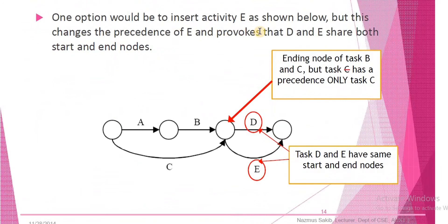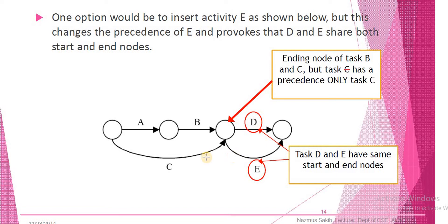One option would be to insert activity E as shown, but this changes the precedence of E and causes D and E to share both start and end nodes. The join node is shared, and E's starting point keeps the same starting point as D. Since D and E are the same in start and end, a conflict will arise.